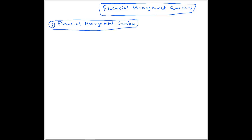Under the financial management function, the first thing you should know is what is financial management. It is very simple — in financial management you should know how to manage your financial resources efficiently in order to achieve the organization's objectives. And the next one is the main areas of financial management.